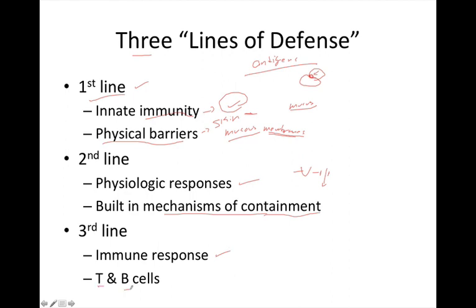The immune response is carried out by T and B cells — more specifically T and B lymphocytes. T cells are called T cells because they mature in the thymus. B cells become immunocompetent in bone marrow. When T and B cells are activated, they are activated when they see a specific antigen — a unique marker on the surface of a cell. The third line of defense, the immune response, is all about precision. This is a precision-type mechanism.